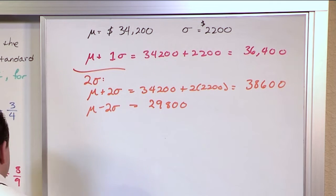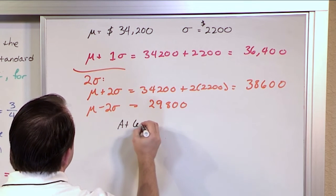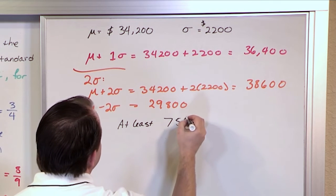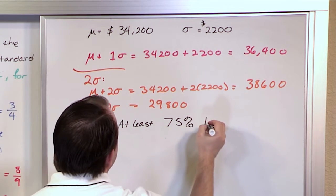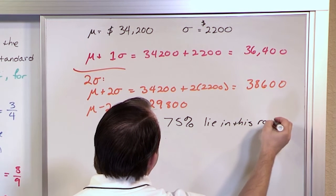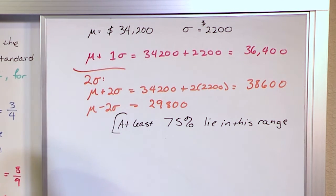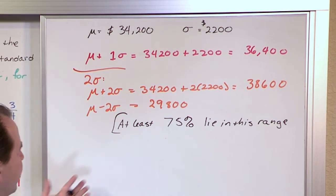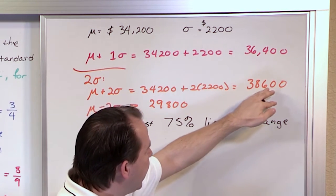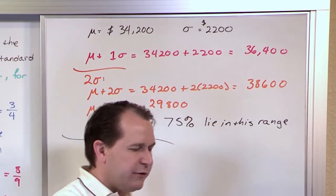So all you have to write on your test is 'at least' — it's important to have those words because it could be greater. At least 75% lie within the range of $29,800 and $38,600. That's basically what you're doing — you're just applying the theorem. For however many standard deviations you care about, you get the percentage, and most of the time you're looking at two or three standard deviations.